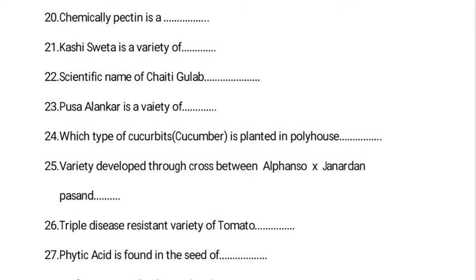Pectin is rich in galacturonic acid. Kashi Sweta is a variety of radish, developed at IIVR Varanasi. The scientific name of Cheti Gulab — Rosa damascena is called Cheti Gulab. Pusa Alankar is a variety of summer squash, and Kashi Alankar is a variety of pointed gourd.